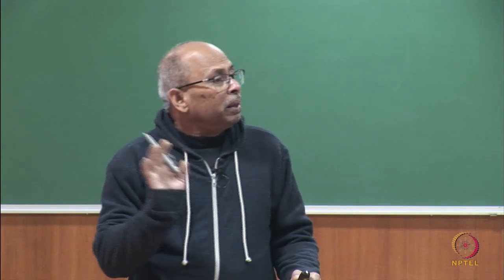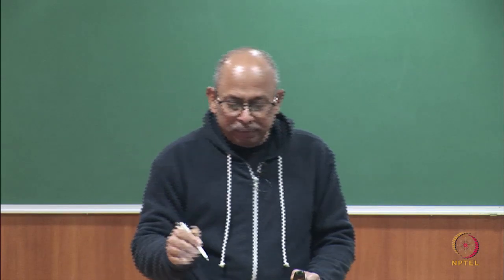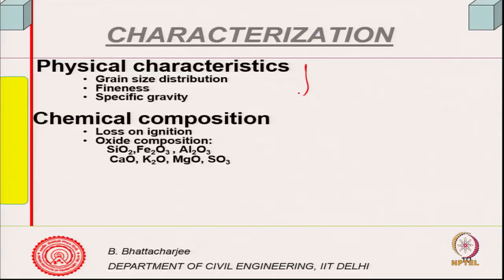Generally, these materials are characterized by physical and chemical characterization. Physical characterization includes grain size distribution and particle size distribution, which are important. Fineness is very important — the finer the material, the faster it will react.